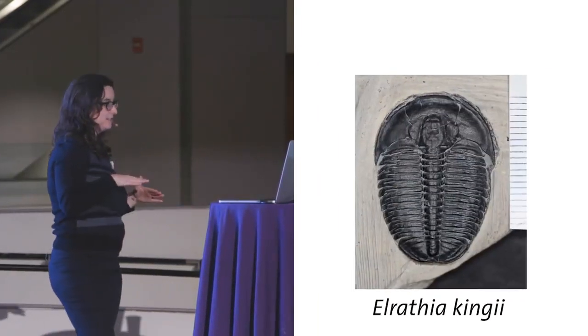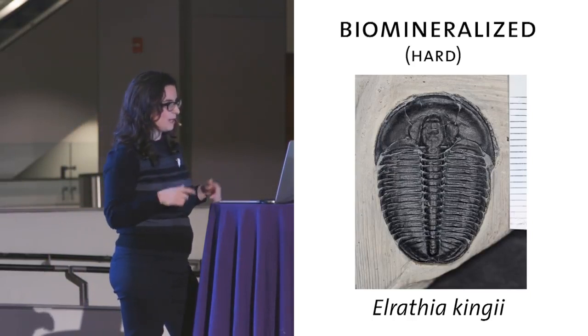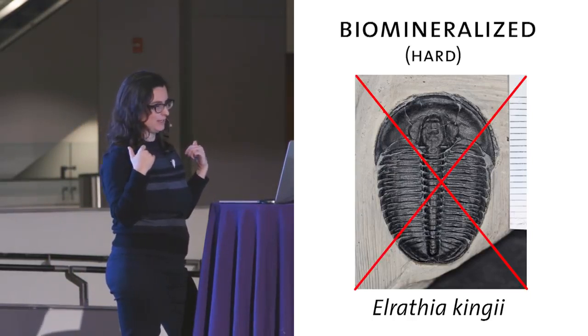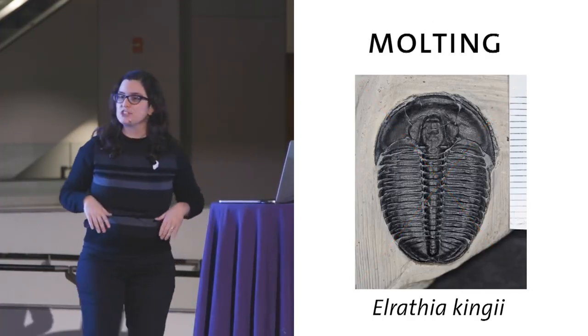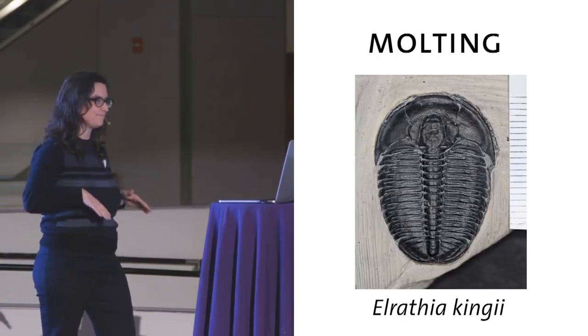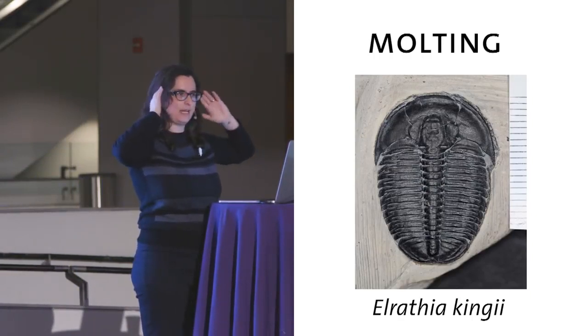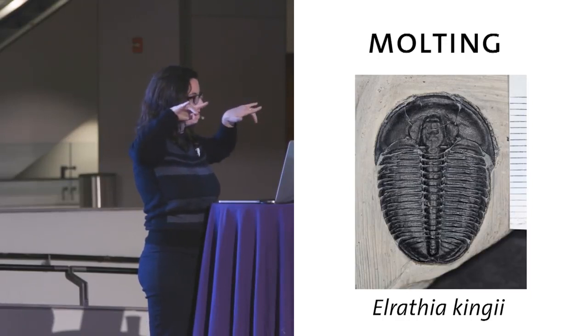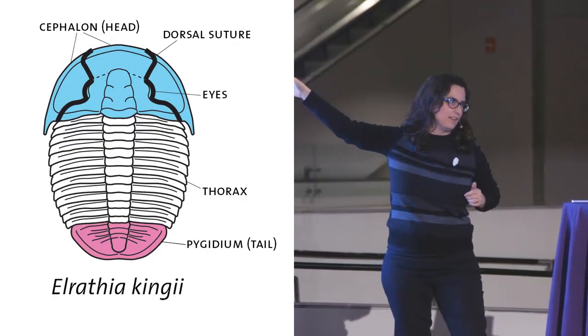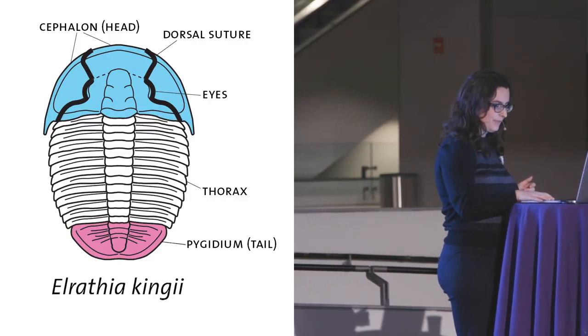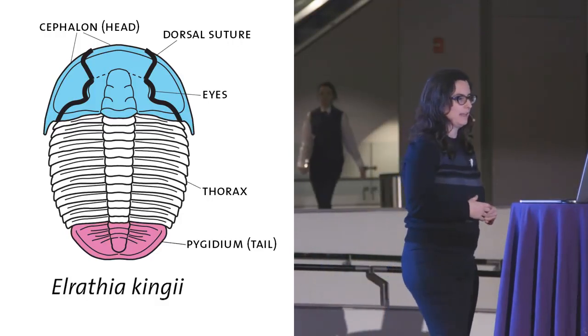So I mentioned earlier that the trilobite exoskeleton was really heavily biomineralized. It was really hard. And like all arthropods, in order to grow, the trilobite had to get rid of this really hard exoskeleton in order to get bigger. And it did this by molting and essentially by allowing the different parts of the exoskeleton to break apart from one another. Crustaceans, some crustaceans do this by actually reabsorbing the calcium carbonate along suture lines. And this lets those parts break apart. In the case of this trilobite species and many others, the head broke apart along these really thick lines that I've drawn here. And in so doing, it actually enabled the trilobite to crawl out of the exoskeleton and leave it behind.